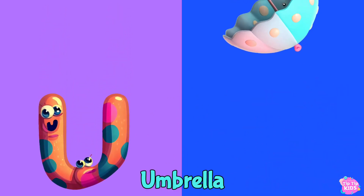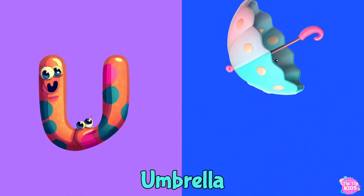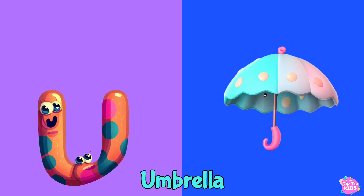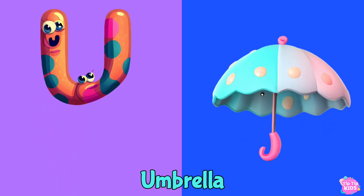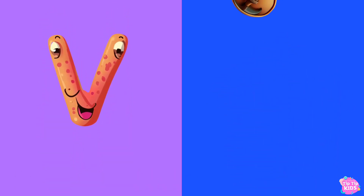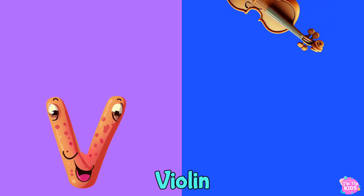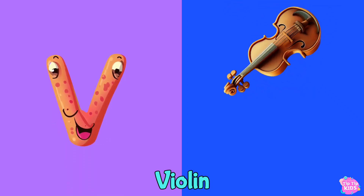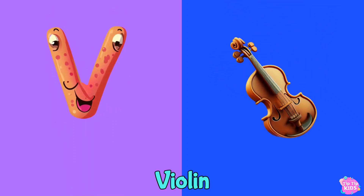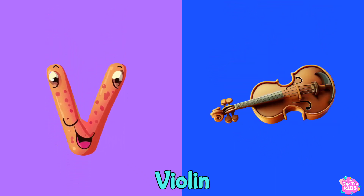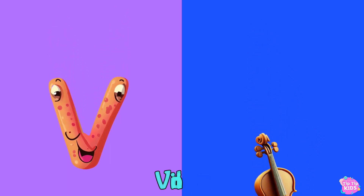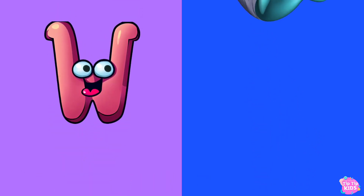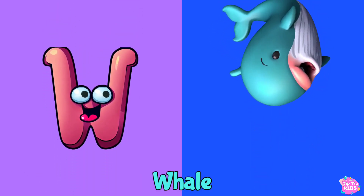U is for Umbrella. U, Umbrella, U, Umbrella, U, Umbrella. V is for Violin. V, Violin, V, Violin, V. Violin.